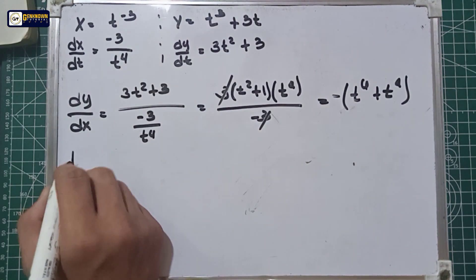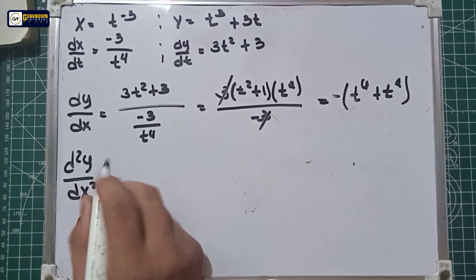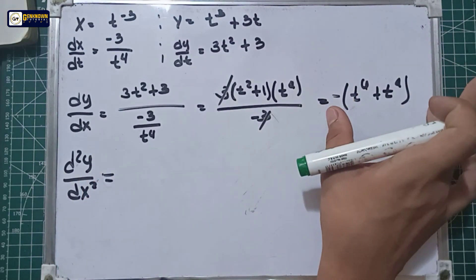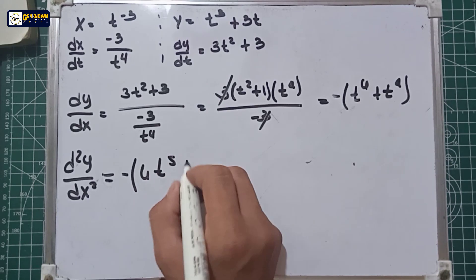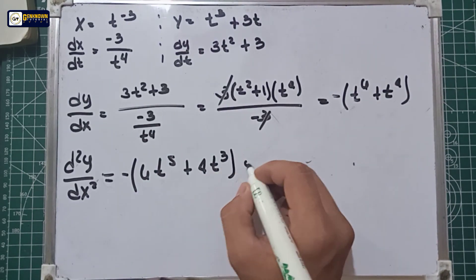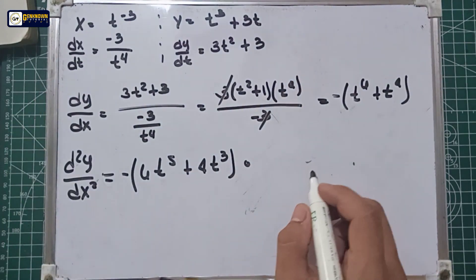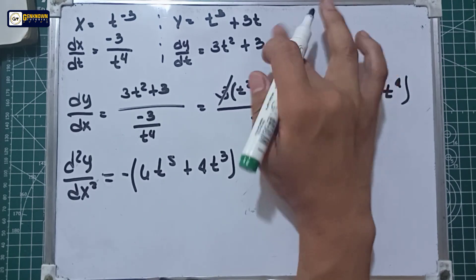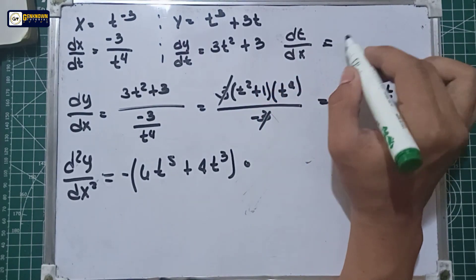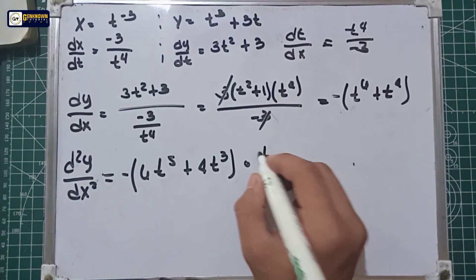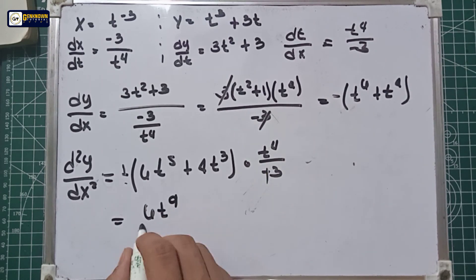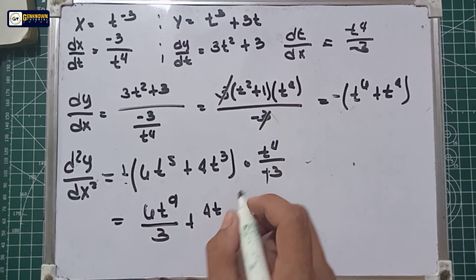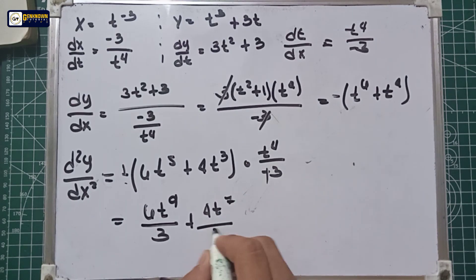For the second derivative, d²y/dx² equals the derivative of the first derivative — which gives us negative 6t raised to the 5th plus 4t cubed — multiplied by the inverse of dx/dt. That inverse dt/dx equals t to the fourth power over negative 3. Since negative times negative is positive, the result is 6t raised to the 9th over 3, plus 4t raised to the 7th over 3.